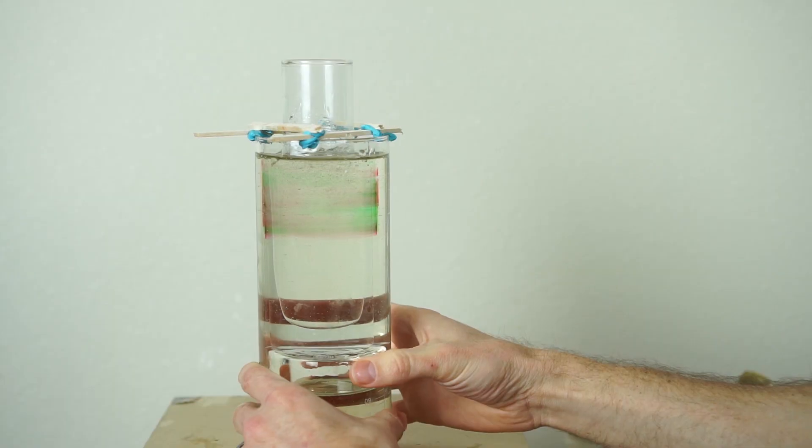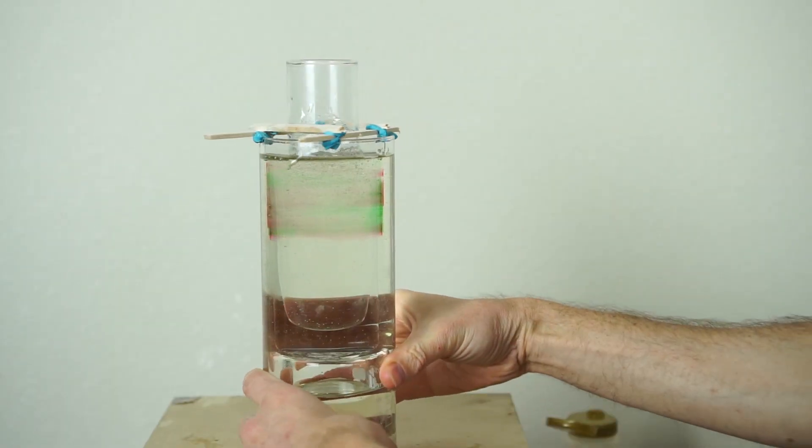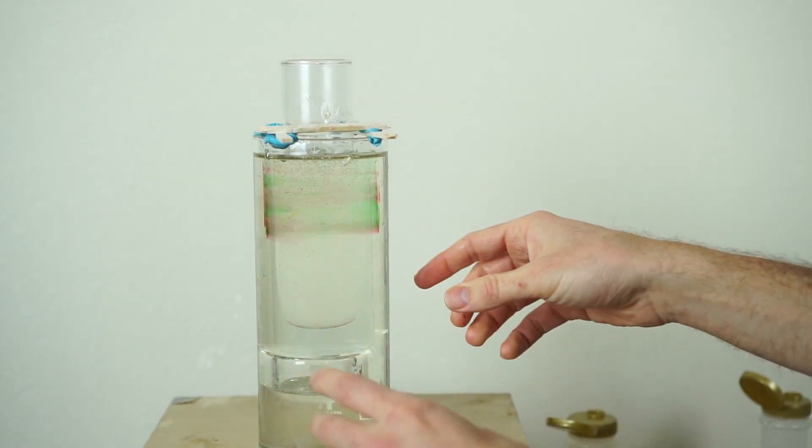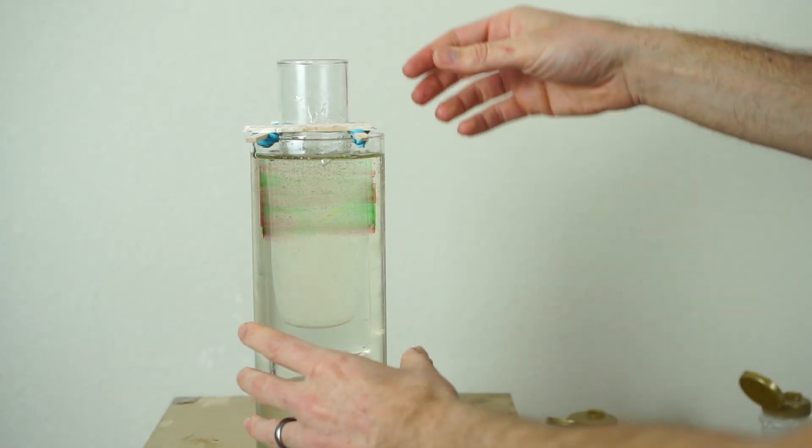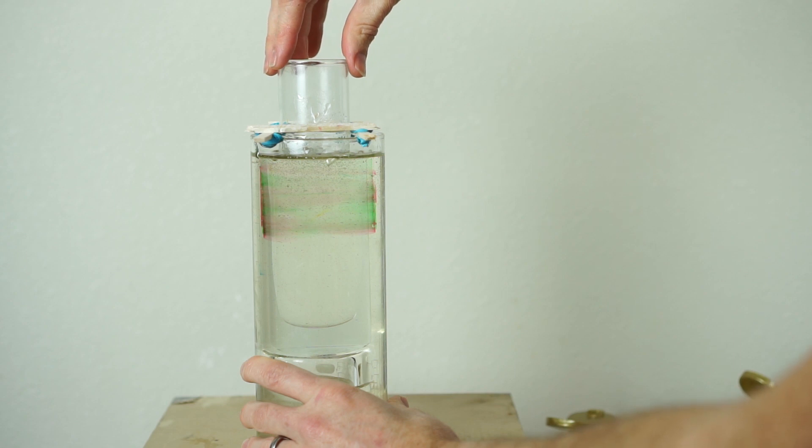At two full rotations you can see it's completely mixed. You can see some streaks of red and green but for the most part the red and green have now mixed completely together. So now let's unmix them.